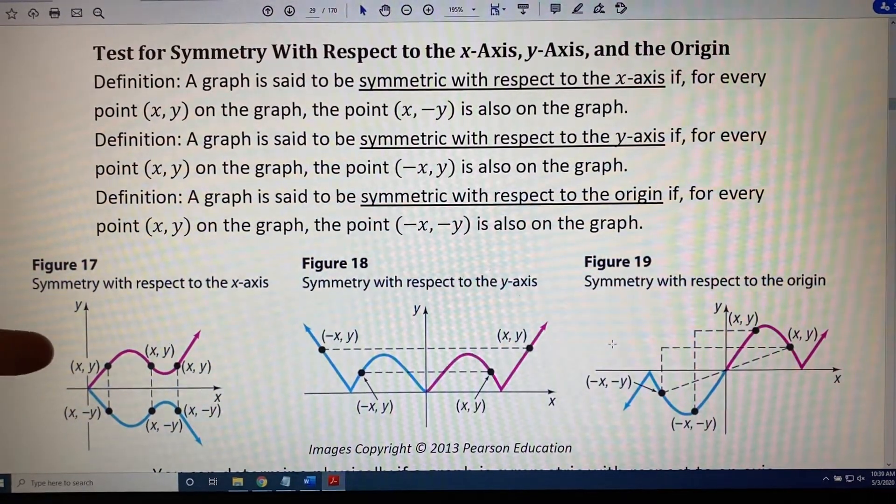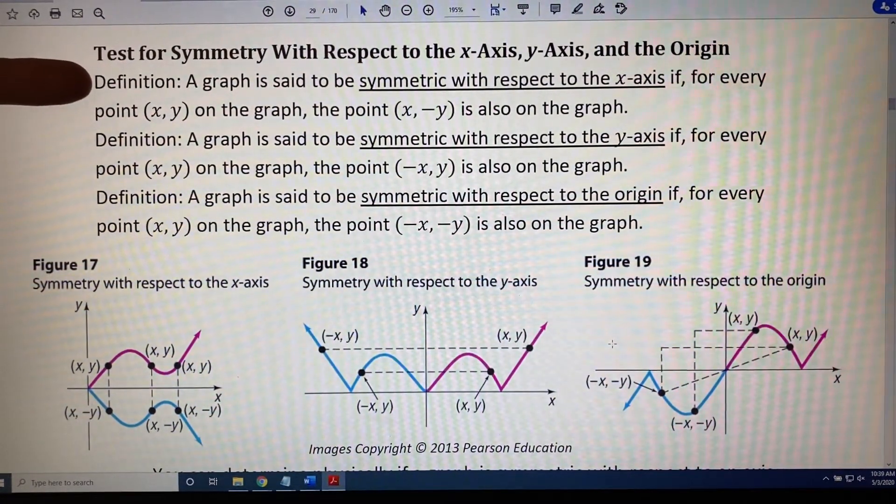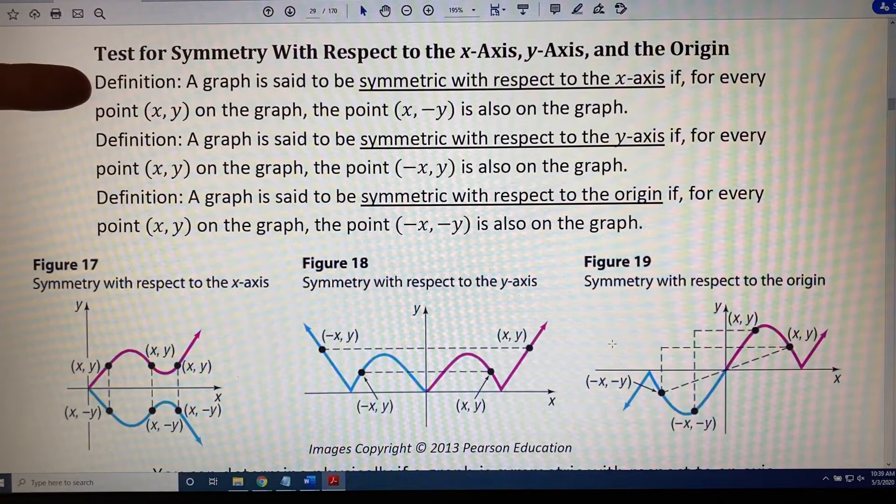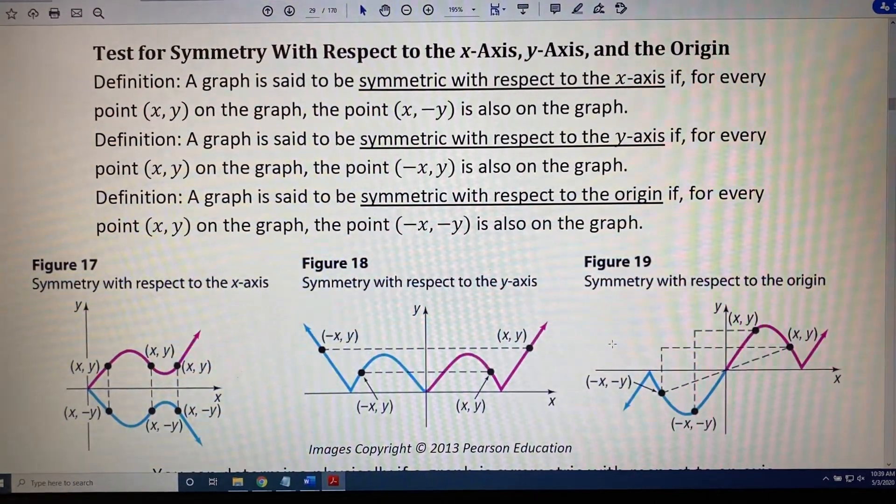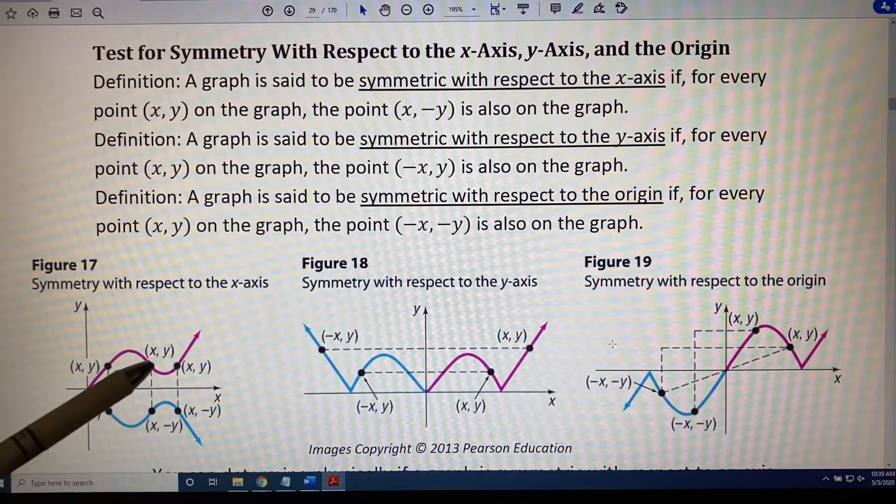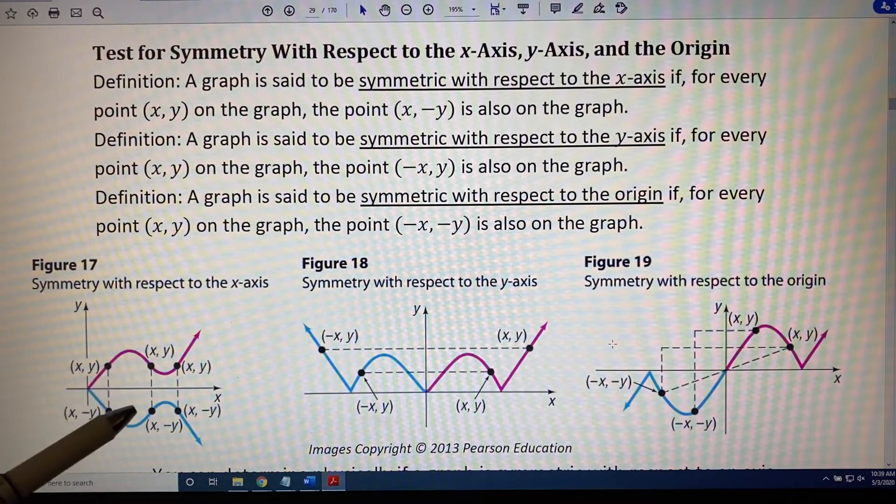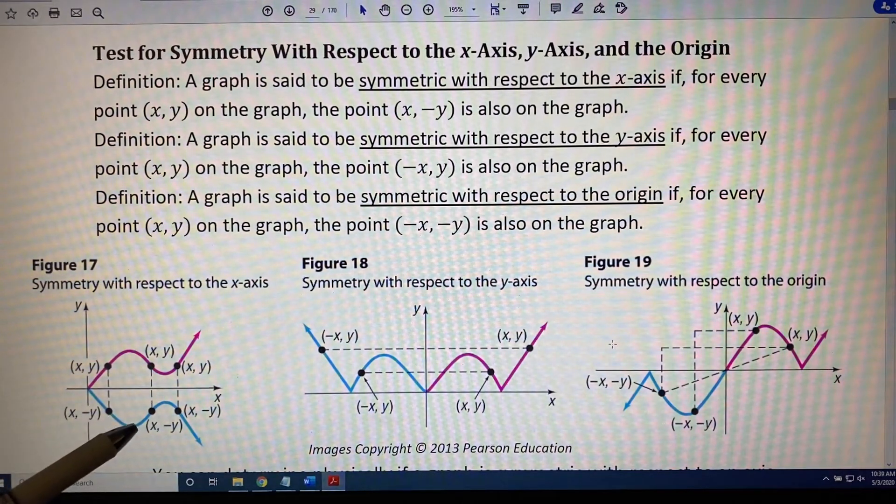Definition, it goes with figure 17. A graph is said to be symmetric with respect to the x-axis if, for every point x, y on the graph, the point x, negative y is also on the graph.